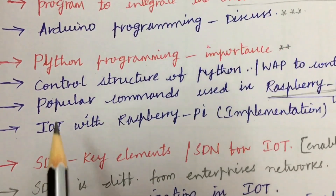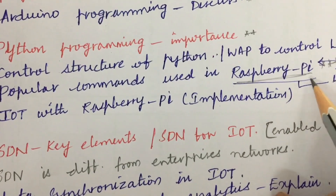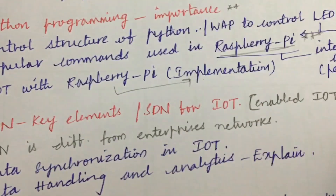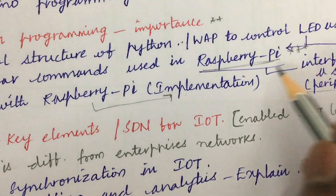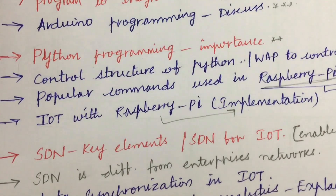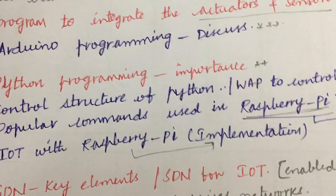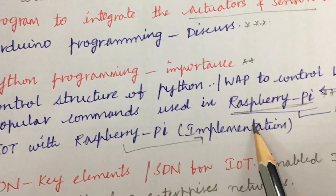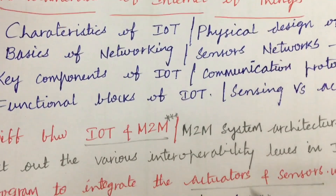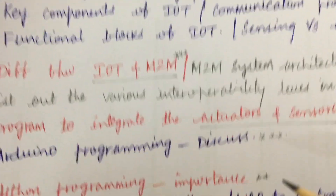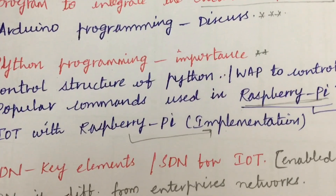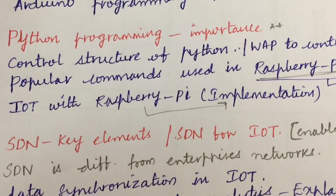From the third unit there will be two questions: popular commands used in Raspberry Pi, IoT with Raspberry Pi implementation, and interfaces with sensors and peripherals of the Raspberry Pi are all important. From these concepts you will get two questions for sure. Covering three units gives 30 marks each — totaling 90 marks — and preparing from these concepts will secure the first five to six questions. This is a scoring subject, so do not skip any point in the examination and try to write very neatly.